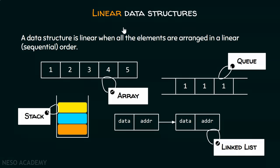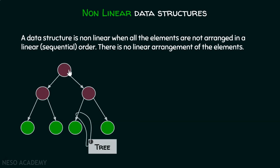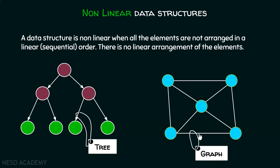Now let's discuss non-linear data structures. A data structure is non-linear when all the elements are not arranged in a linear or sequential order — there is no linear arrangement. For example, here we have a tree data structure. This data structure is non-linear because each node does not have exactly one predecessor and one successor. You can see this node has one predecessor but two successors. Graph is also a non-linear data structure.